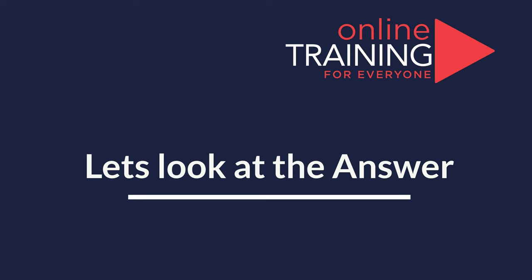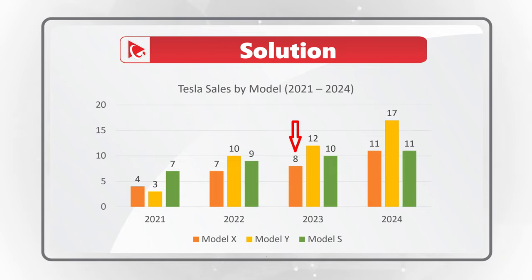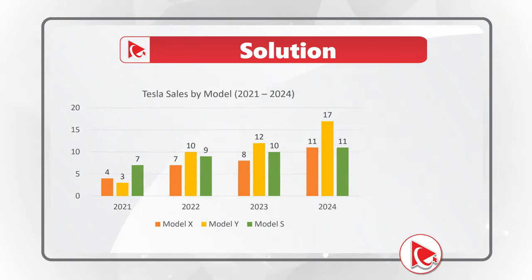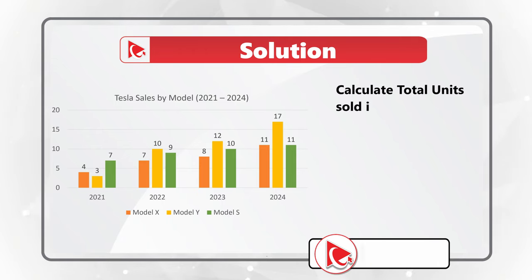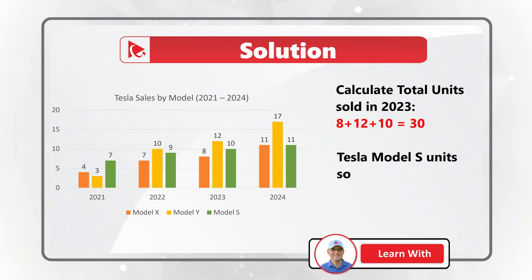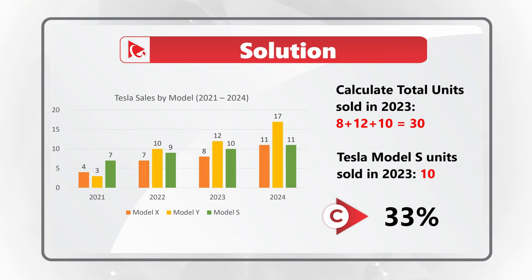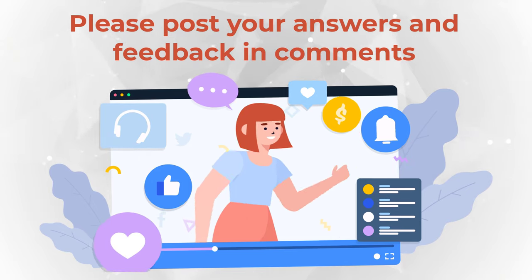Hopefully you figured it out because I am moving forward to share the final answer. Let's take a close look at the 2023 sales: 8 units of Model X, 12 units of Model Y, and 10 units of Model S. Total units sold in 2023 would be 8 plus 12 plus 10 equals 30. We sold 10 units of Model S, which is one-third of the 30 units in total. So the correct choice is one-third of 100%, which is approximately 33%, Choice C.